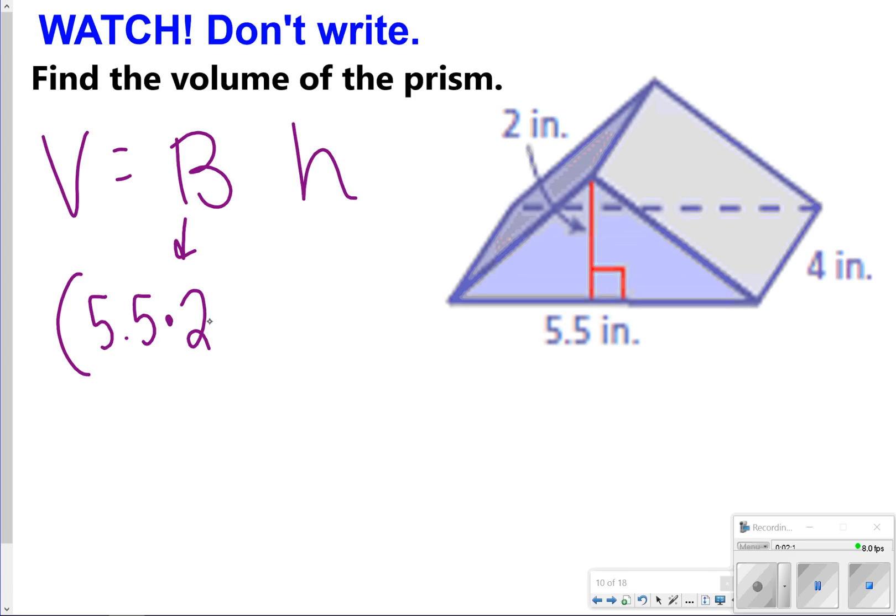In this case, those 2s are just going to cancel out. That won't always be the case, though, because sometimes your height of the triangle will be different than a 2. 5.5 times 2 divided by 2 is 5.5, and then 5.5 times 4 is going to give us 22 inches cubed.